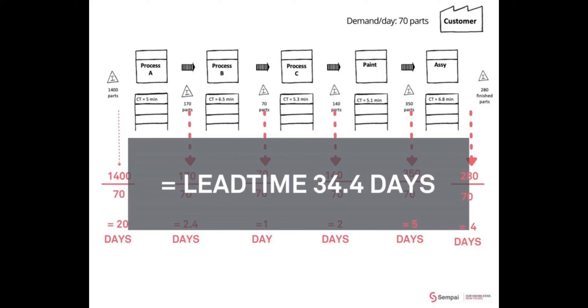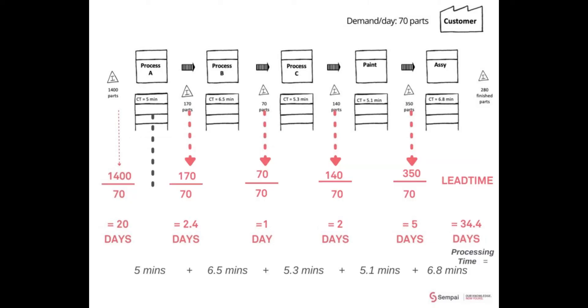That's the time it takes to get one part through your factory from start to finish. Now for a bonus, you can see that I've also added up the cycle times in the boxes here under A, B, C, paint, and assembly, and the actual transformation time, the value-added time, is less than half an hour.